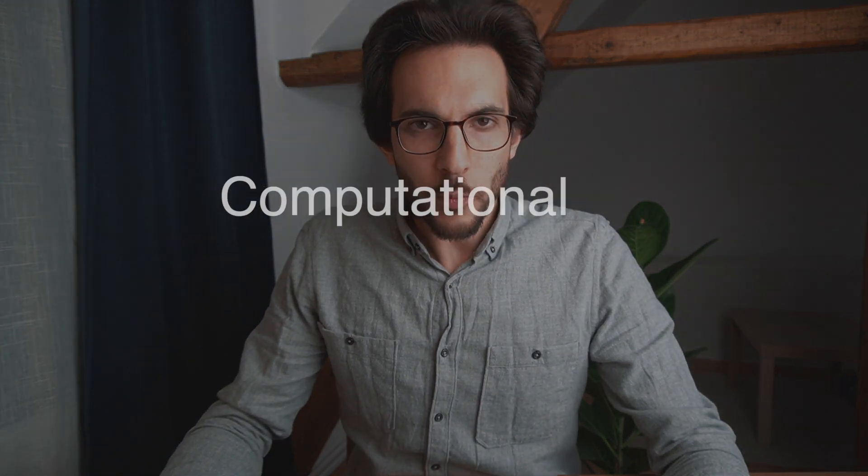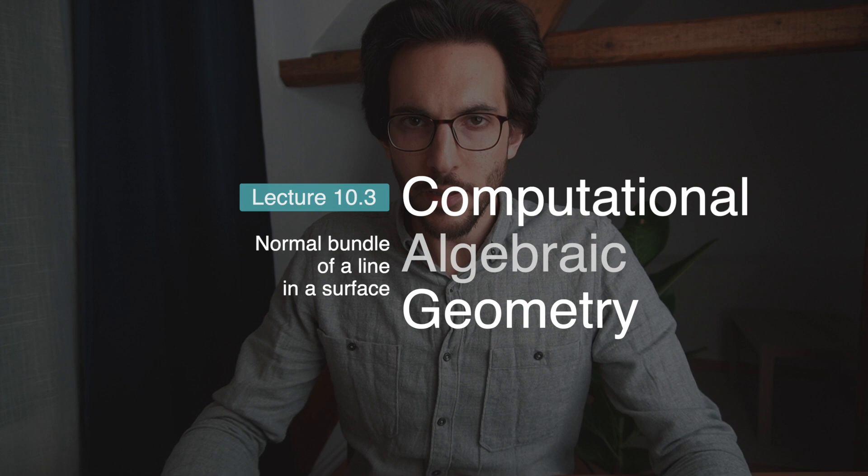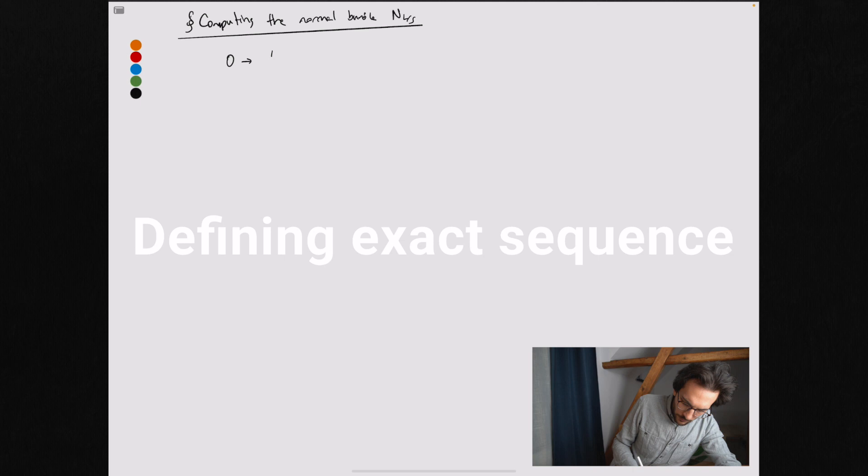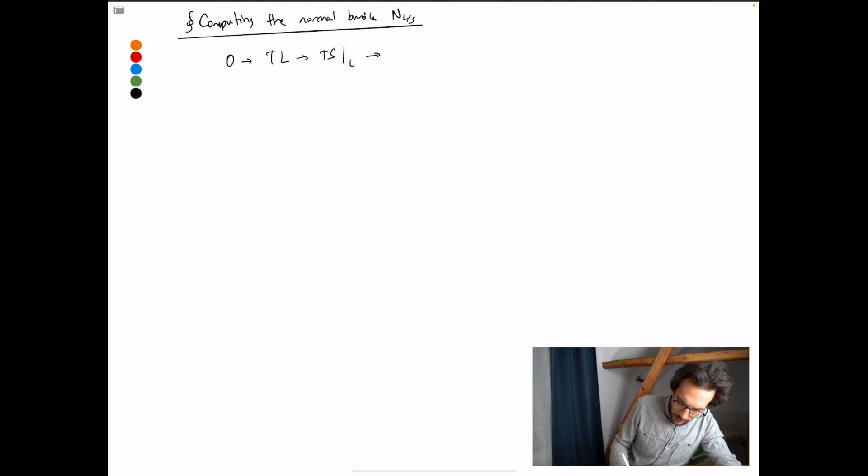What remains to be done is to understand the normal bundle of a line L inside of a surface S. Let's start computing with the objects that we know and we can recognize. So we begin by writing the equation TL goes to TS restricted to L goes to NLS.